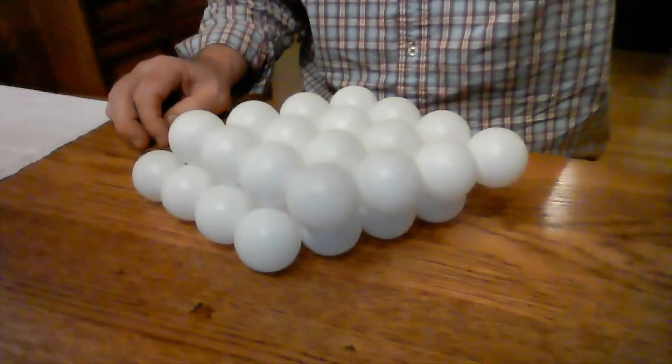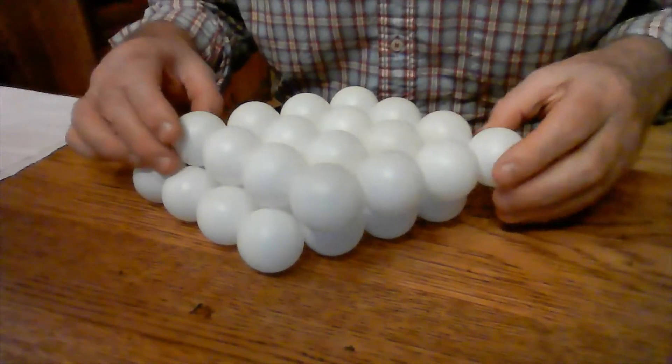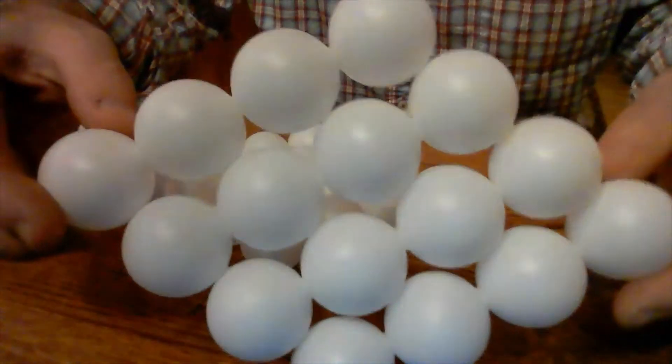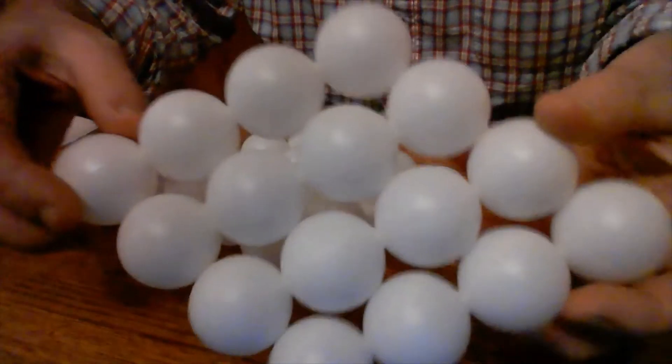We're talking about slip and also twinning, possible twinning in BCC. So here's the slip plane for BCC and you have in FCC, you can see these gaps here.